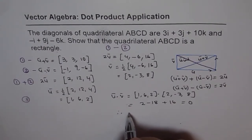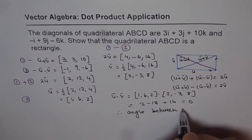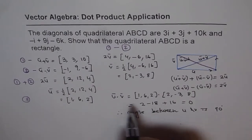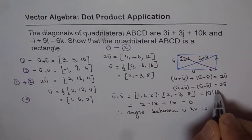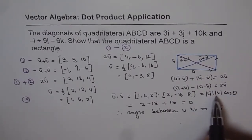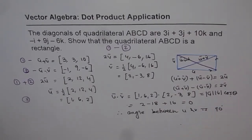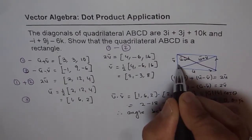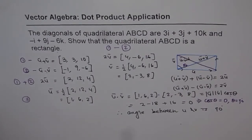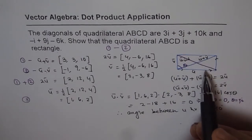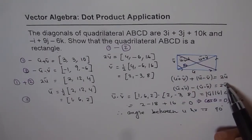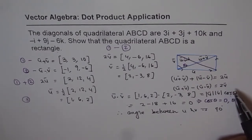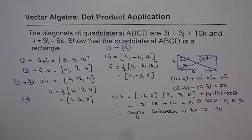Therefore, the angle between u and v is 90°. Since dot product equals |u||v|cos θ, and u and v are non-zero, cos θ = 0, meaning θ = 90°. The strategy here is to find the vectors from the diagonals — this is a key step in vector algebra. With the dot product we can determine the angle between any two vectors, and that's how we prove ABCD is a rectangle.